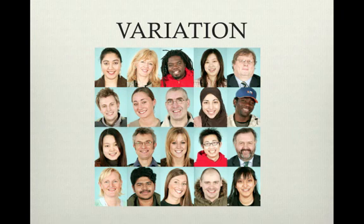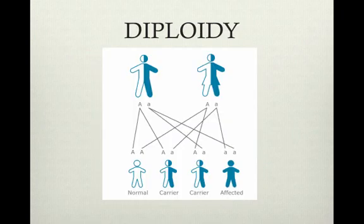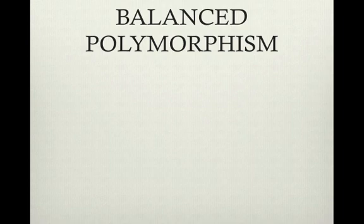Mutations and recombinations in sexually reproducing individuals create variation. Natural selection could tend to eliminate all unfavorable genes and reduce variation, but there are mechanisms that help prevent this. Diploidy is when most eukaryotes are diploid, which helps maintain recessive alleles through heterozygotes. Heterozygotes, or carriers, usually don't have the recessive phenotype, so they can survive and reproduce. Balancing polymorphism is a balance of different alleles in a population, and it can be created in two ways.